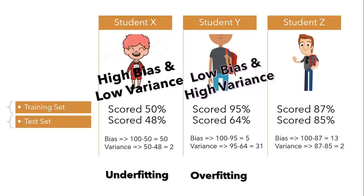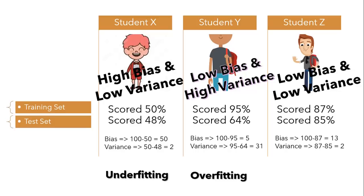Last but not the least, student Z, who scored almost the same in both conditions, is a perfect example of the best fit — where the model has low bias and low variance, with values 100 minus 87 = 13 and 87 minus 85 = 2. In a nutshell, our model must have low bias and low variance for better performance, as the model aims at the target and hits it with good precision.